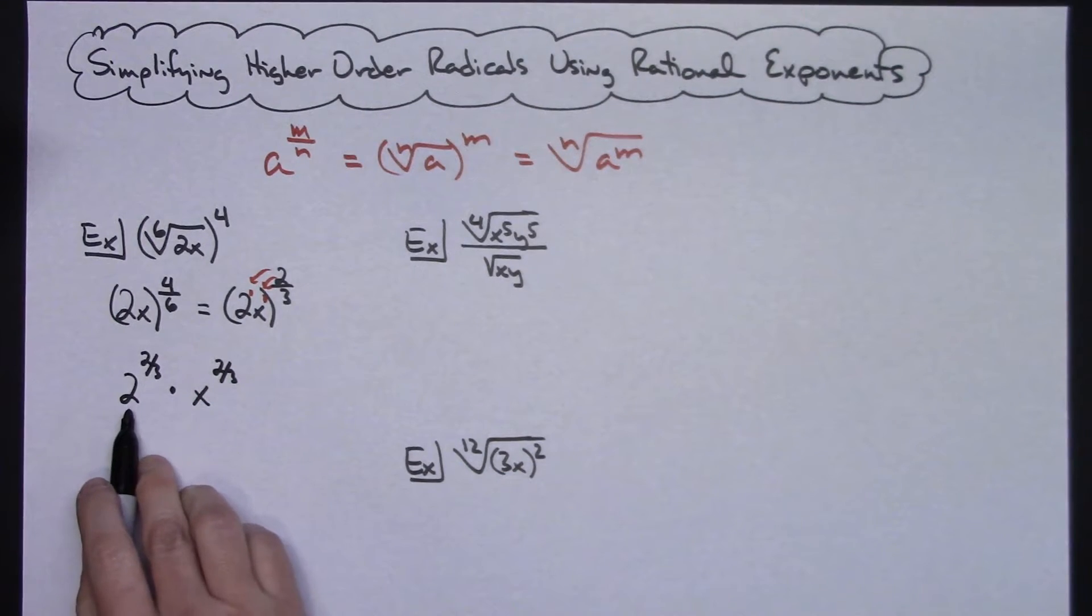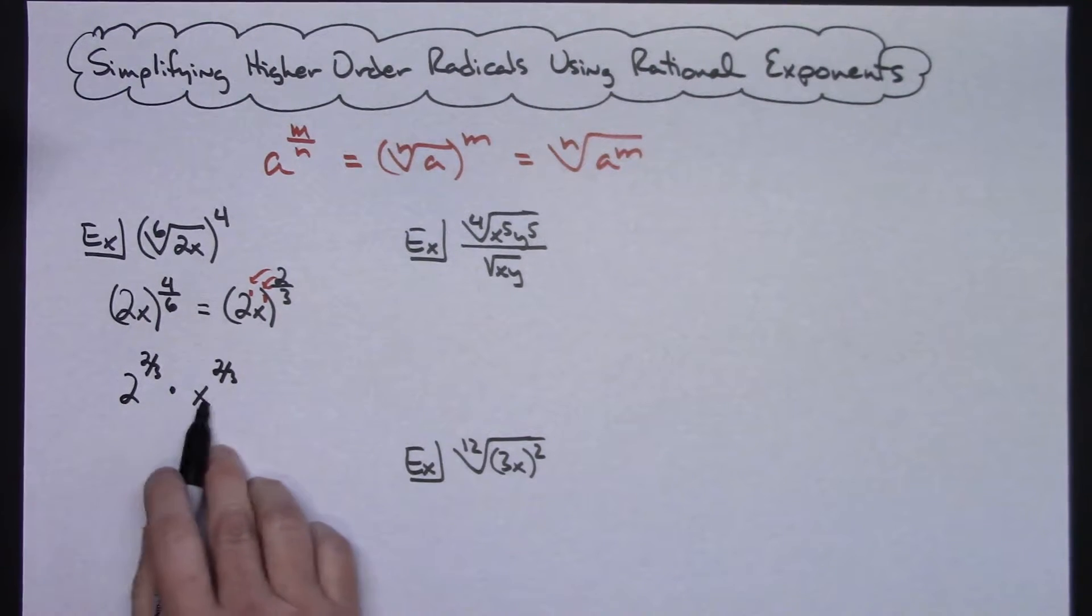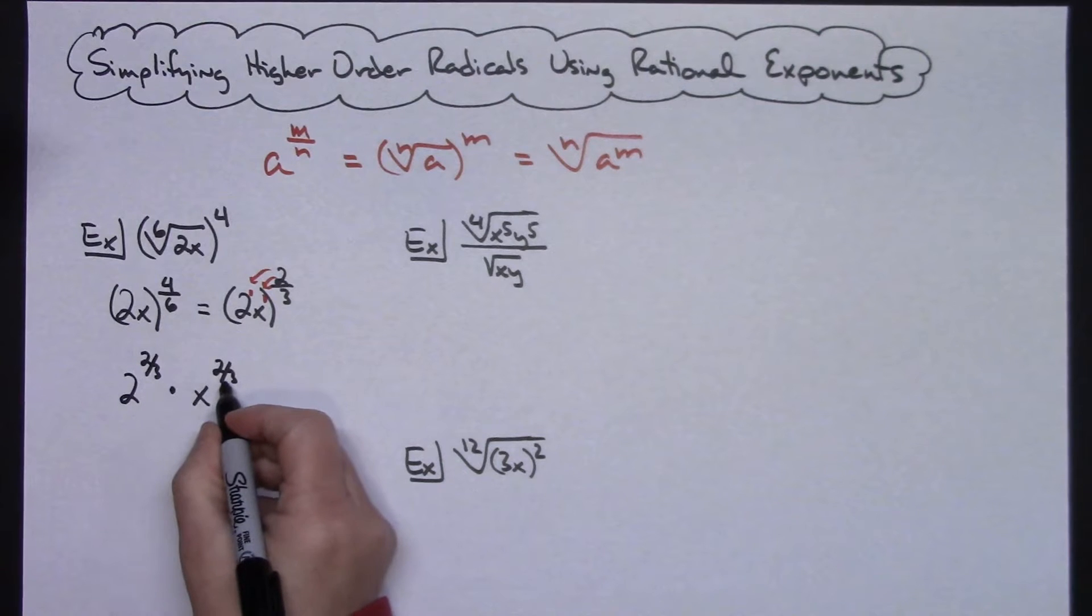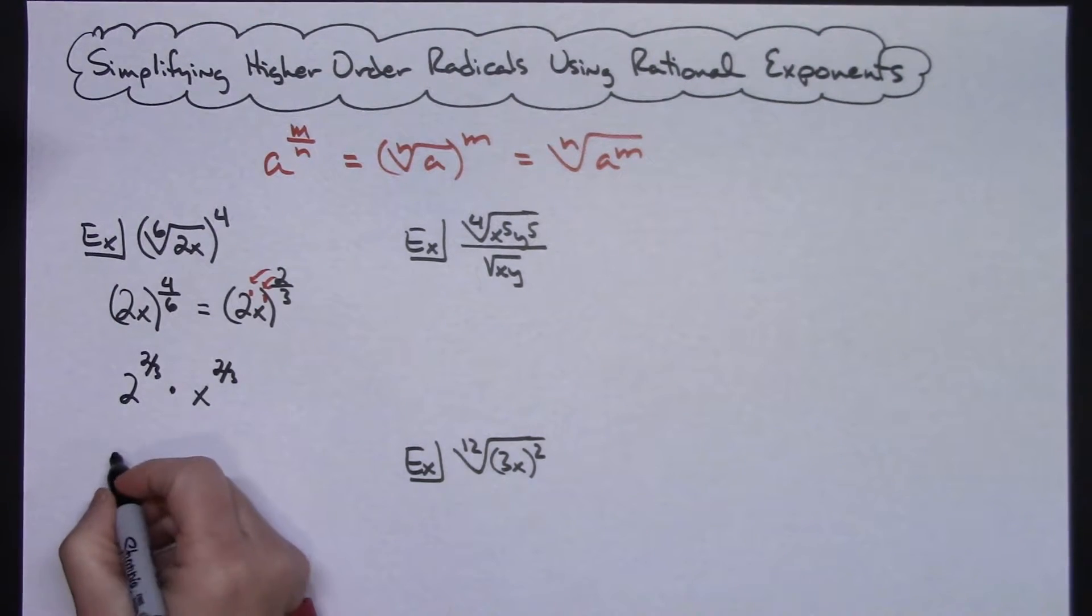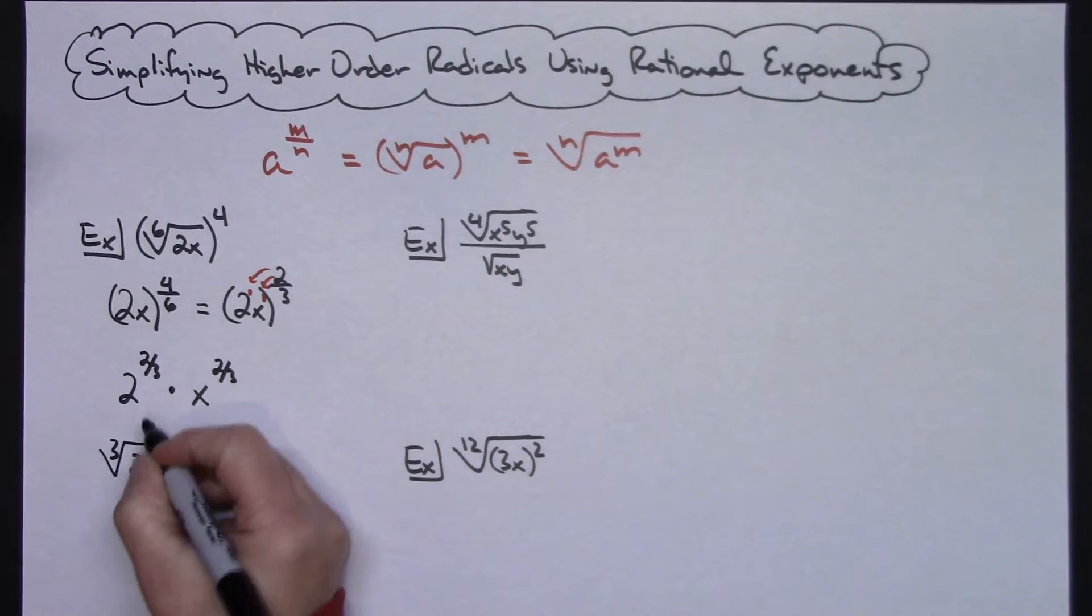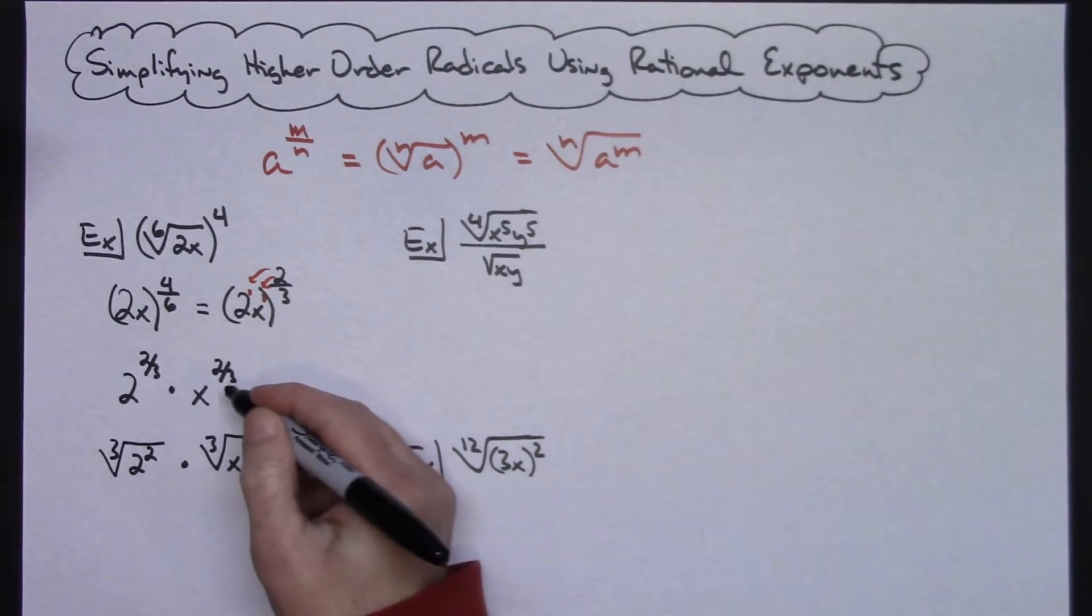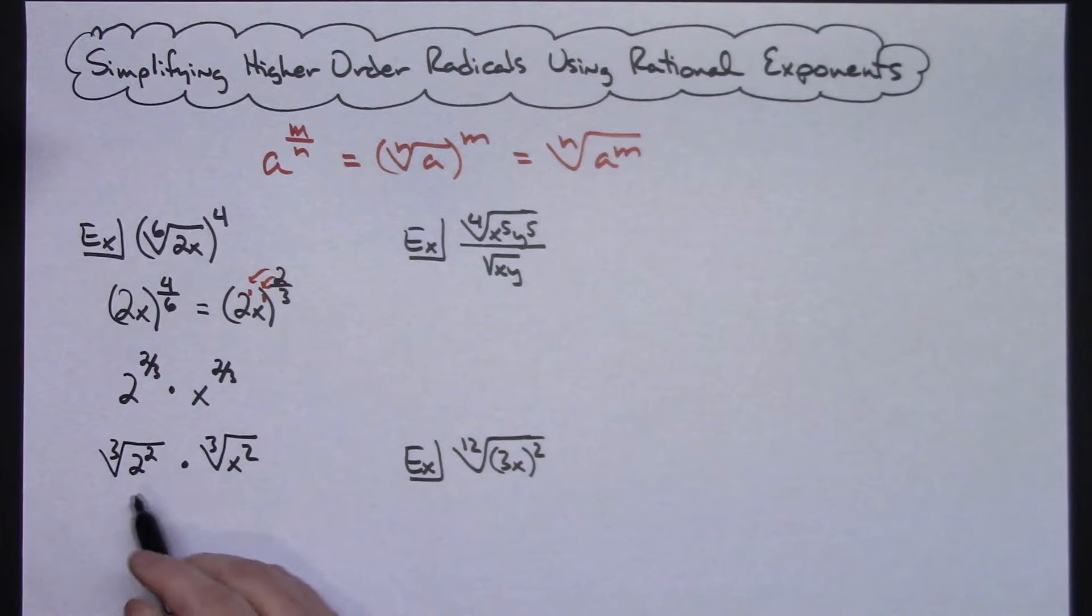Now I can turn both of these into a radical. So that bottom there will be my root. So the third root of 2 squared and then the third root of x squared. So all I did was go back into radical form there.